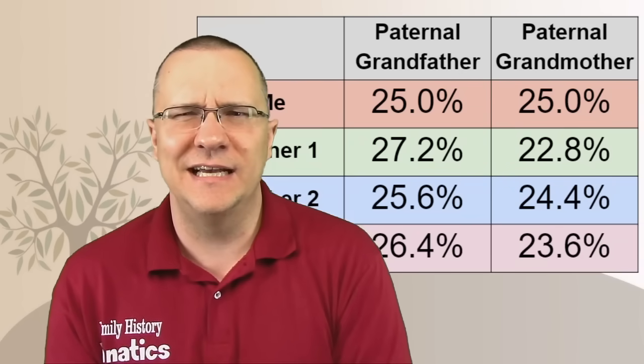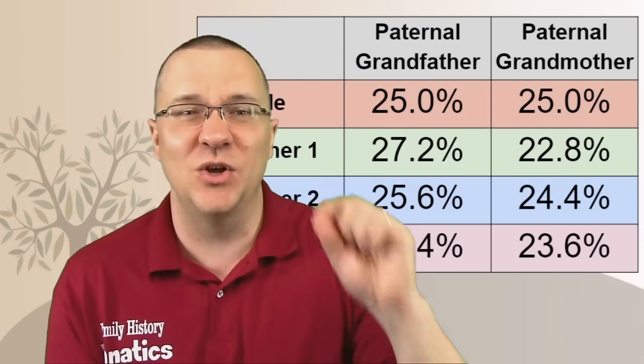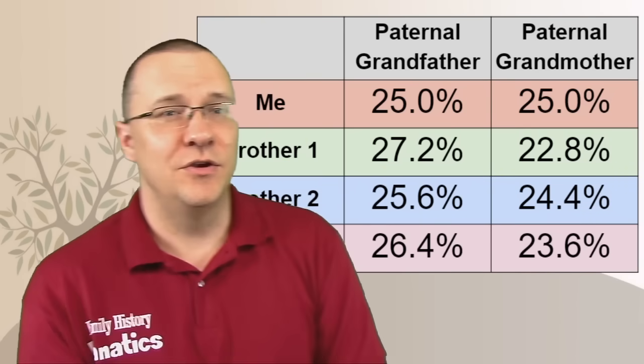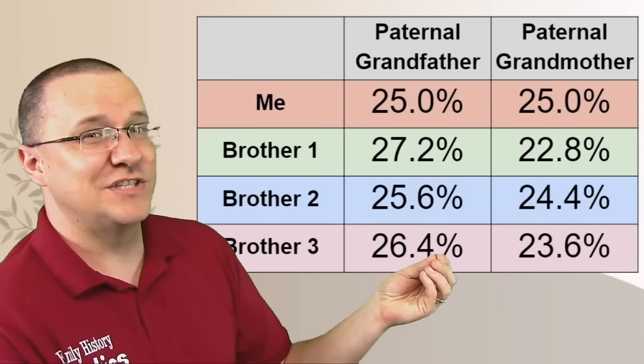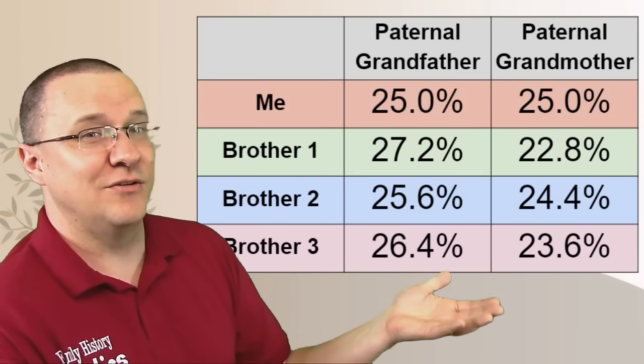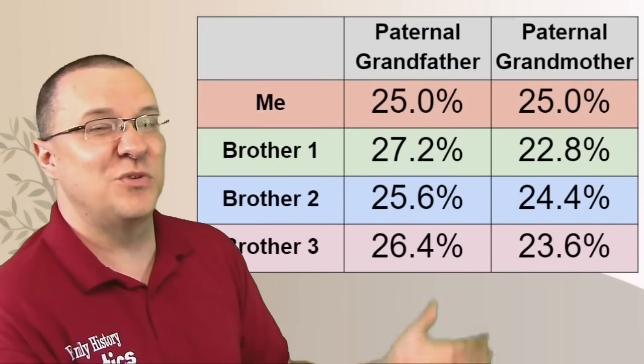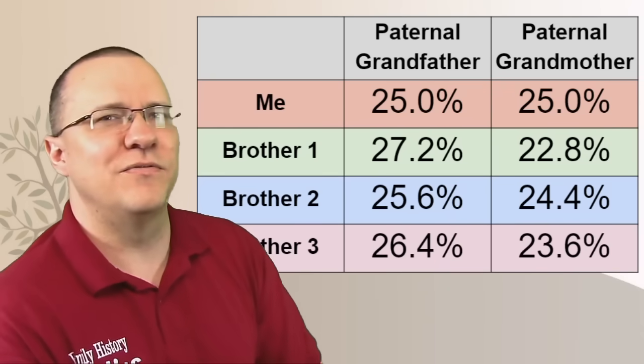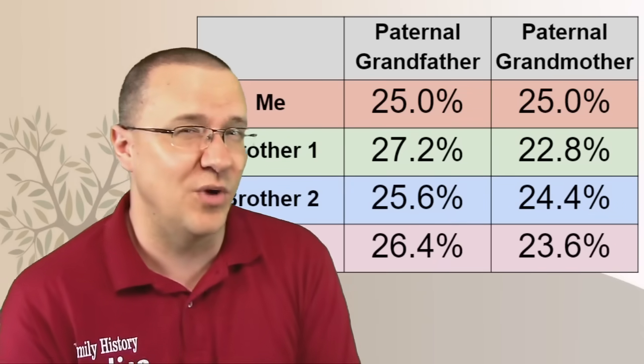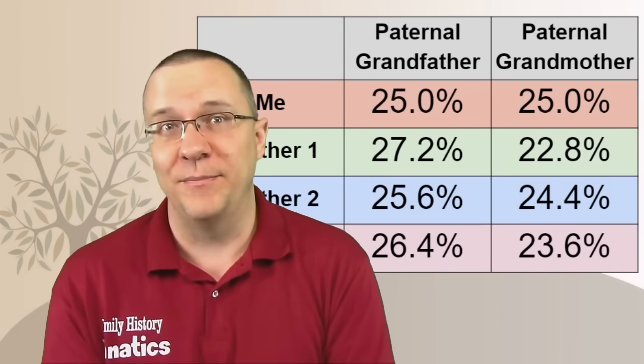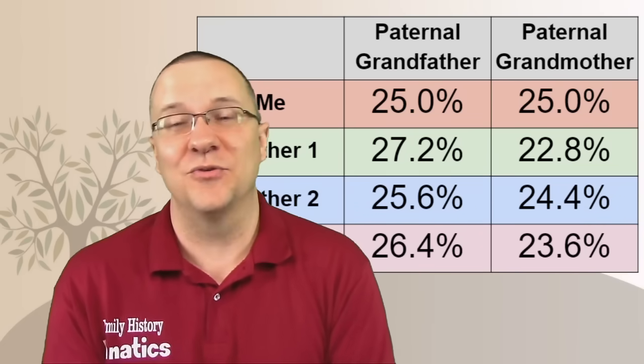Yeah, but see, I'm sort of the exception because if I look at my brothers here, you can see that some of them are 27%, looks like down to 22%, 23, 24, 25, 26. They're all around 25%, but none of them actually got 25% from either one of our paternal grandparents. These are the same paternal grandparents.